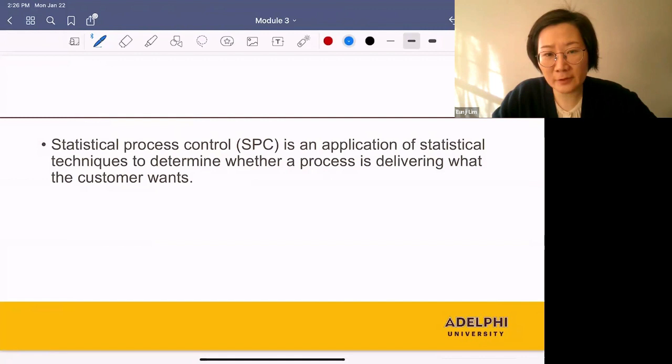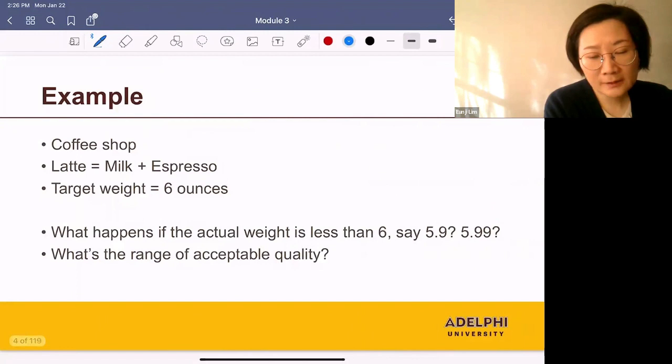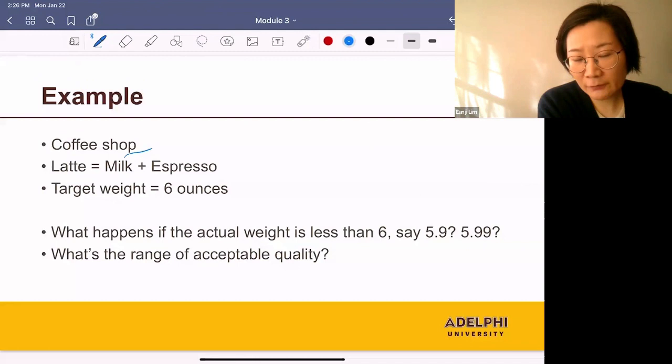The first question is, when can we use statistical process control? Let's take an example. Say you're running a coffee shop, and one of the most popular drinks is latte. How do you make a latte? You warm up milk and pour it into espresso.